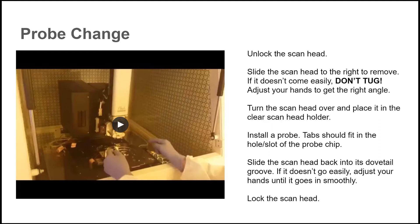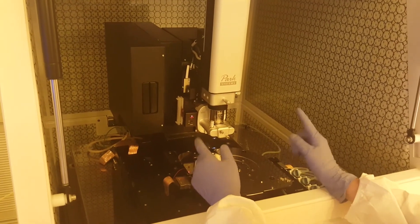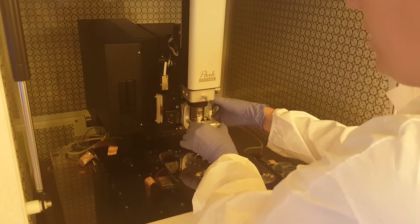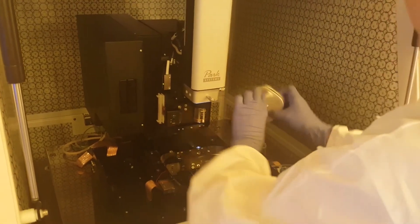Let's begin by exchanging a probe — we're going to watch a video of this happening at the tool. You'll see the following steps: unlock the scan head, slide the scan head to the right, place the scan head in its holder, install a probe, slide the scan head back into its dovetail groove, and lock the scan head. To put a new tip on the tool, first unlock the scan head by pushing the tabs — elephant ears — in, then take the scan head and slide it to the right. It should come easily; if not, change the angle of your hands and don't force it.